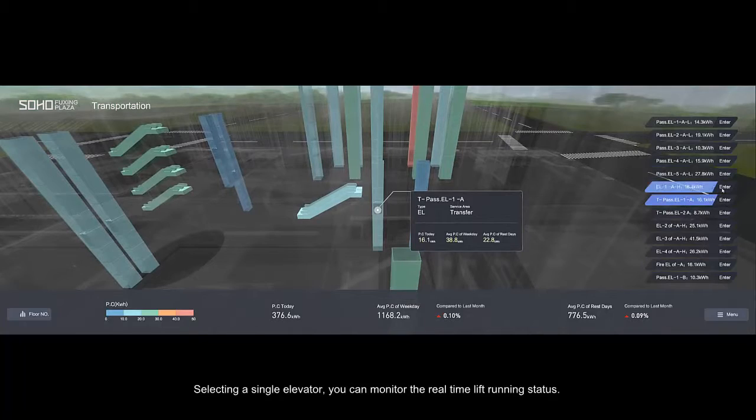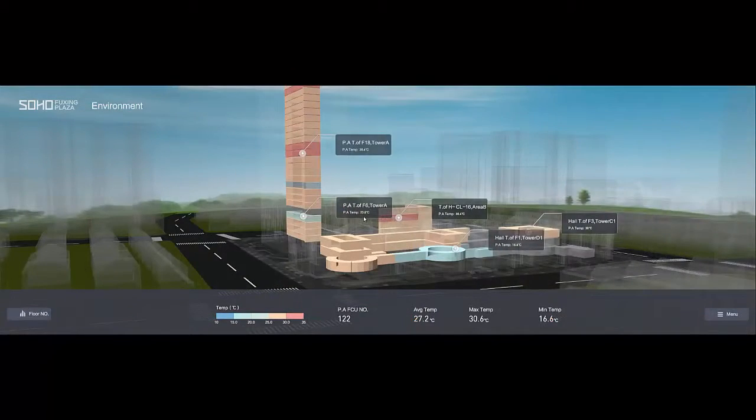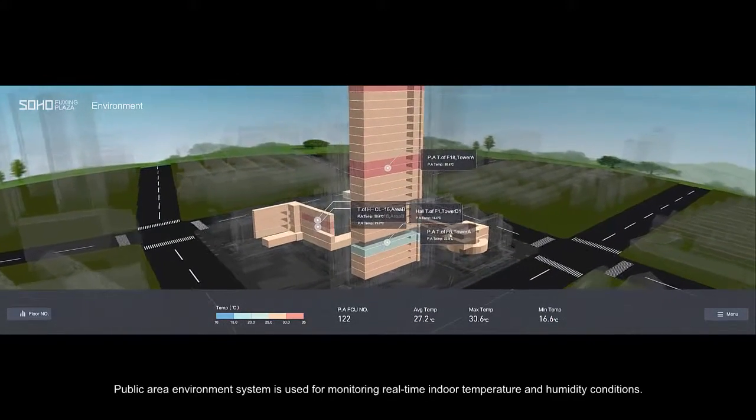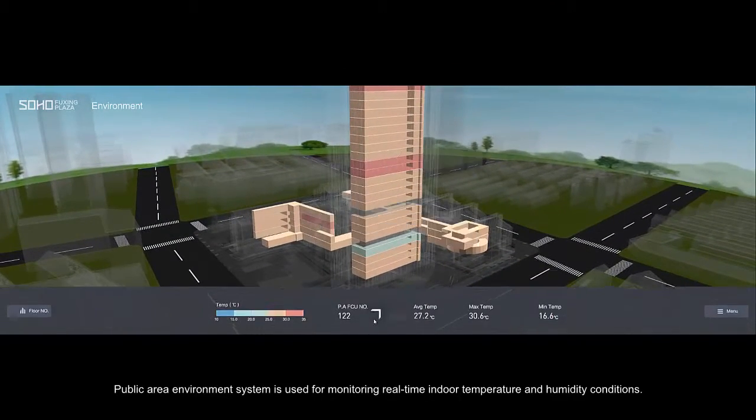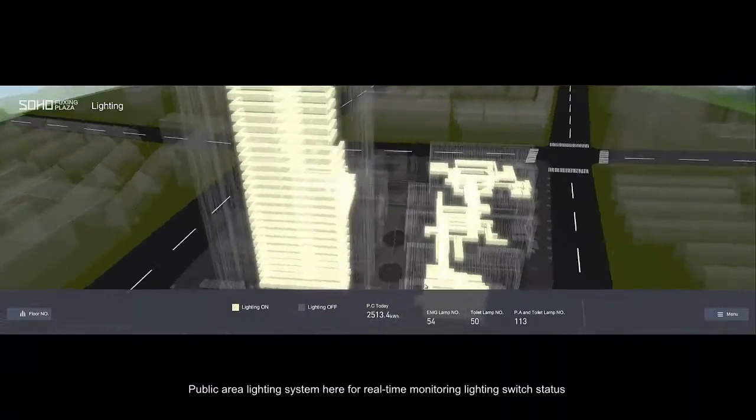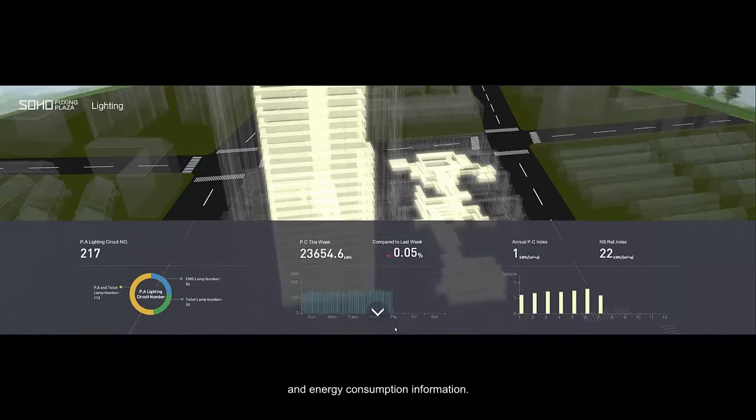Selecting a single elevator, you can monitor the real-time lift running status. The Public Area Environment System monitors real-time indoor temperature and humidity conditions. The Public Area Lighting System monitors real-time lighting switch status and energy consumption information.